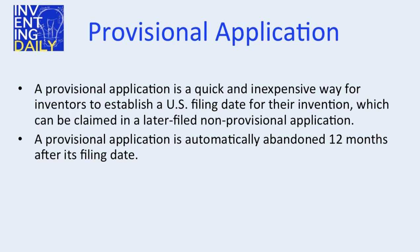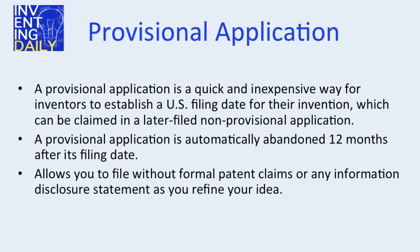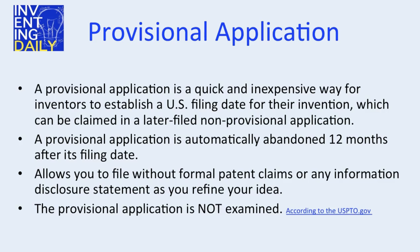A provisional application is automatically abandoned 12 months after its filing date. It allows you to file without formal patent claims or any information disclosure statement as you refine your idea. The provisional patent application is not examined by the USPTO.